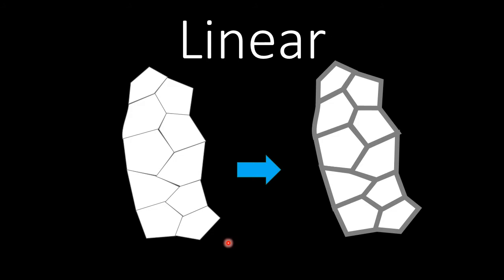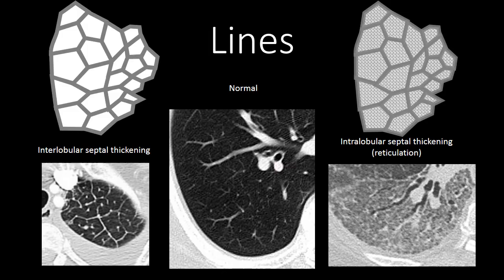The first thing we'll discuss in interstitial lung disease is thickening of the interlobular septa. If that thickening is smooth, we call that linear or smooth interlobular septal thickening, and that creates the appearance of lines on both chest x-rays and chest CTs.